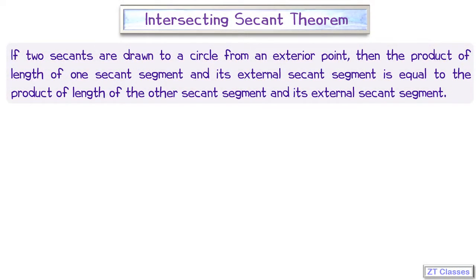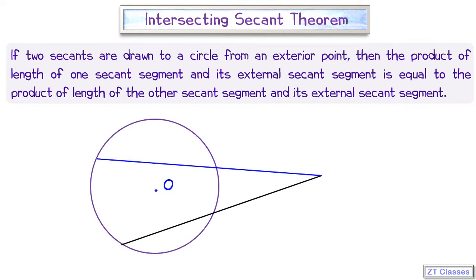Let's see what is intersecting secant theorem. If we have a circle with center O and two secants are intersecting at external point P, let's say these secants are cutting the circle at point AB and point CD.